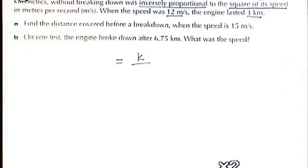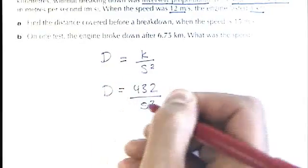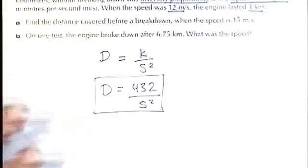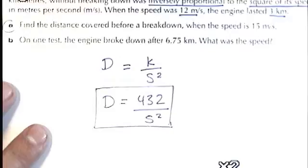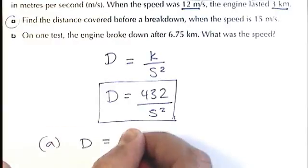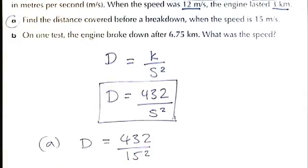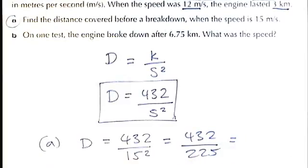What were the questions? Well, let's go back to those questions. Zoom in a little bit. OK, we have the formula which I've just worked out is D equals 432 over S squared. Like that. And now we're going to have a go at part A. Find the distance covered before a breakdown when the speed is 15 meters per second. Let's just zoom in and make sure you can see that. OK, when the speed is 15 meters per second. So for part A, I need to use my formula, but I need to put 15 as my speed. Like that. So that's 432 divided by 225, which makes 1.92 kilometers.